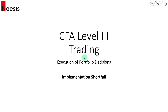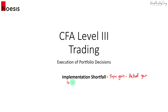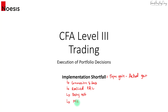Under the topic on execution of portfolio decisions, there is a calculation on implementation shortfall. We normally calculate this as the paper gain on the portfolio minus the actual gain on the portfolio. In the exam, they can test you on the calculation of the separate individual components. Under implementation shortfall, we can have commission and fees, realized profit and loss, delay cost, and lastly, the missed trade opportunity cost.